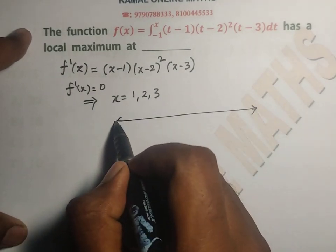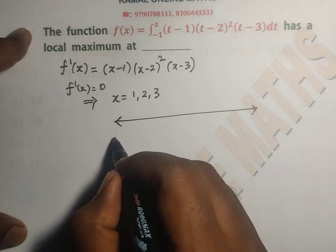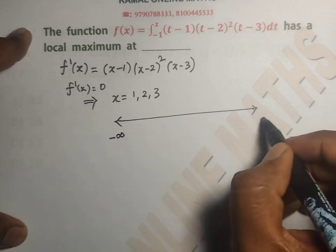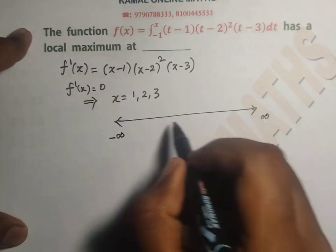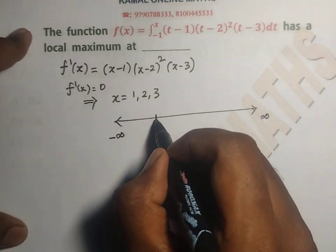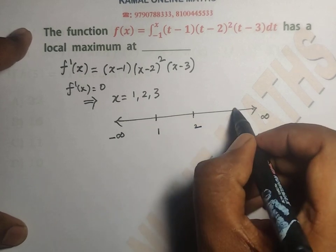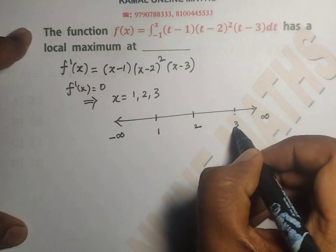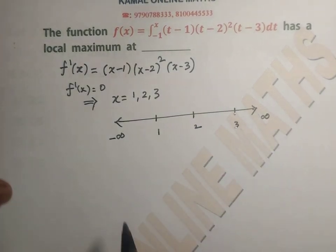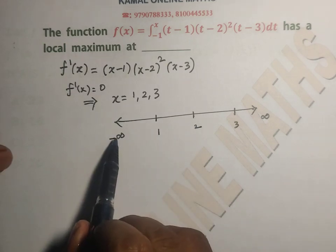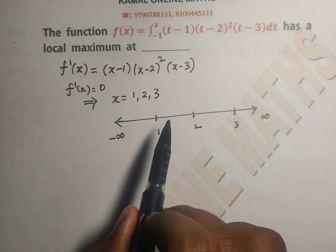Assume the real line from minus infinity to plus infinity with critical points x = 1, x = 2, x = 3. We analyze the intervals: (-∞, 1), (1, 2), (2, 3), (3, ∞) to determine the behavior of f'(x) in each interval.